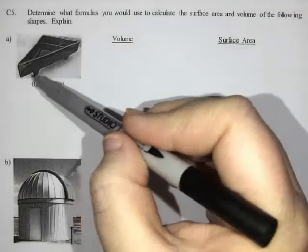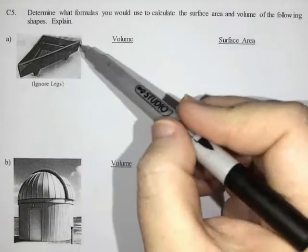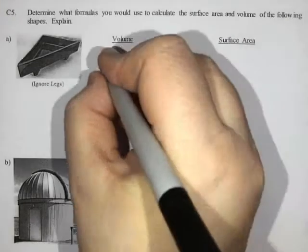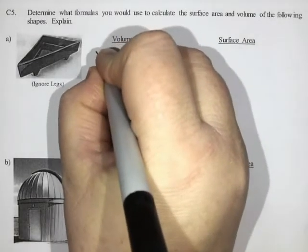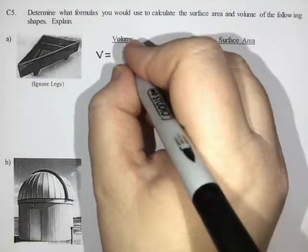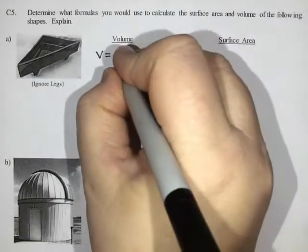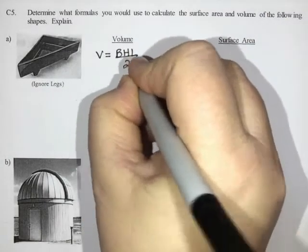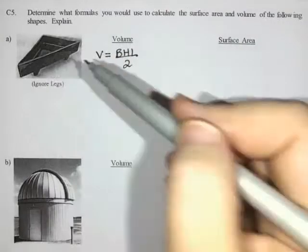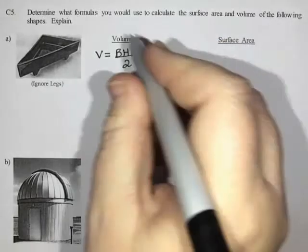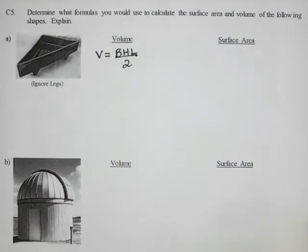If I take a look at this one here, it does say ignore the legs. This is a triangular prism. I know that the volume for a triangular prism is base times height times length divided by two. We're filling up the shape, right? It's not just a part of a triangular prism. It's a whole triangular prism. So that really is the formula that we're going to use. Nothing special.